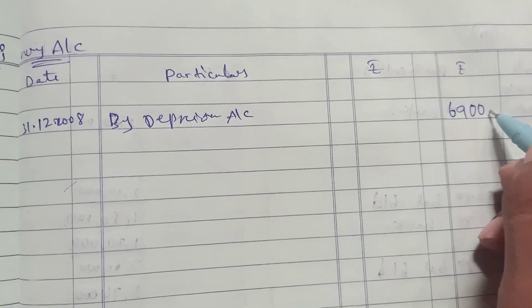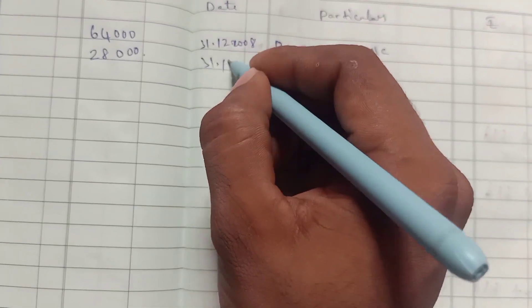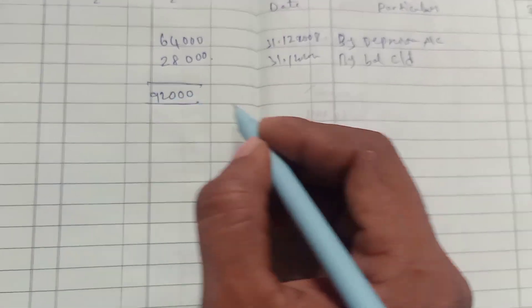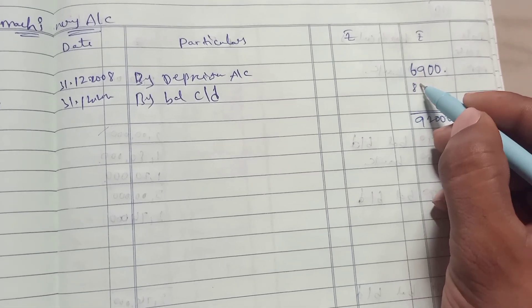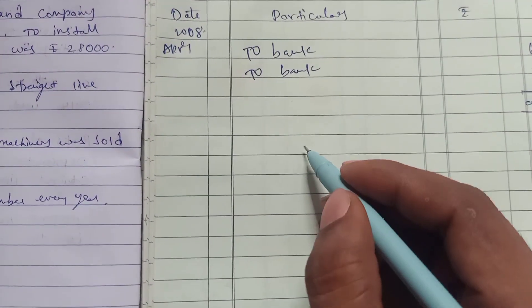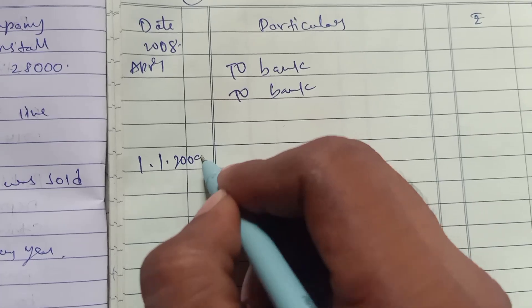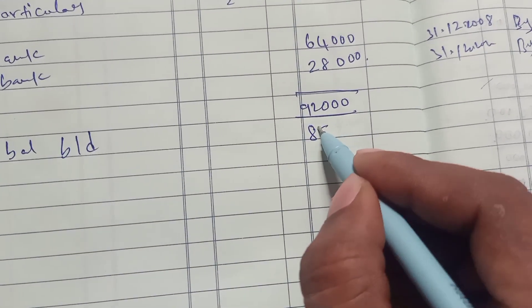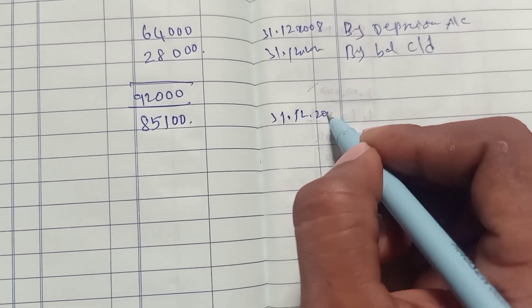By balance carried down on same date, total $92,000. $92,000 minus $6,900, balance is $85,100. Then next year, carry forward - 1/1/2009 to balance brought down $85,100. Current year depreciation on 31/12/2009.